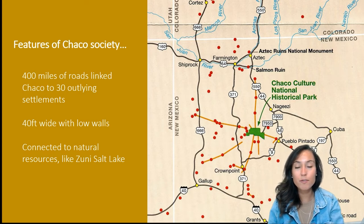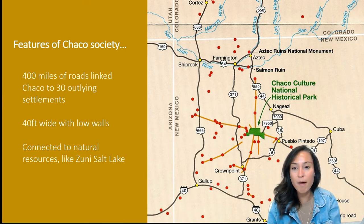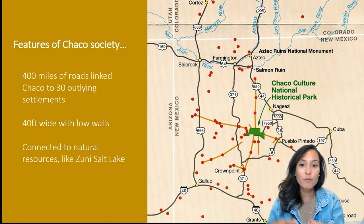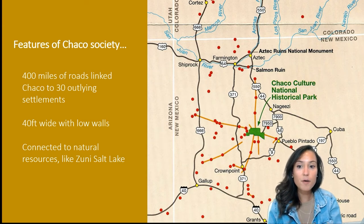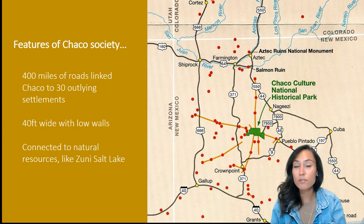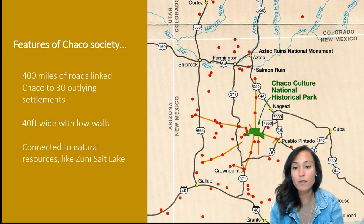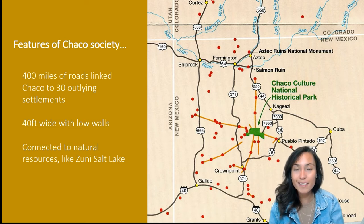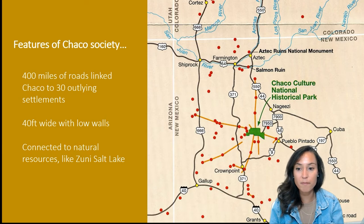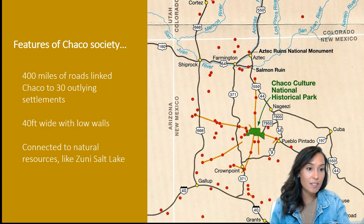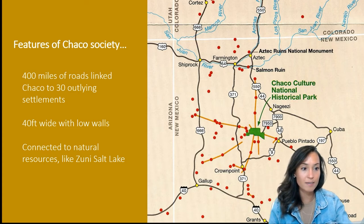In addition to these great kivas and large great houses like Pueblo Bonito, Chaco Canyon contains 400 miles of roads that link this ceremonial center to 30 different outlying settlements. Other roads connect Chaco to natural resources like the Zuni Salt Lake. These roads were up to 40 feet wide, cut a few inches into the soil, and often marked with low rock walls. The road network runs for long distances — in one instance up to 60 miles — and must have involved large numbers of people and considerable centralized organization.